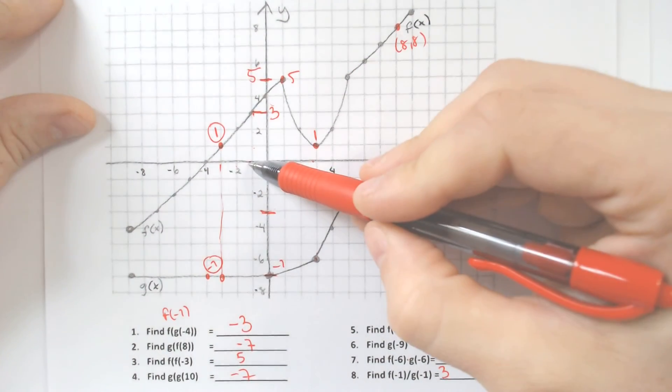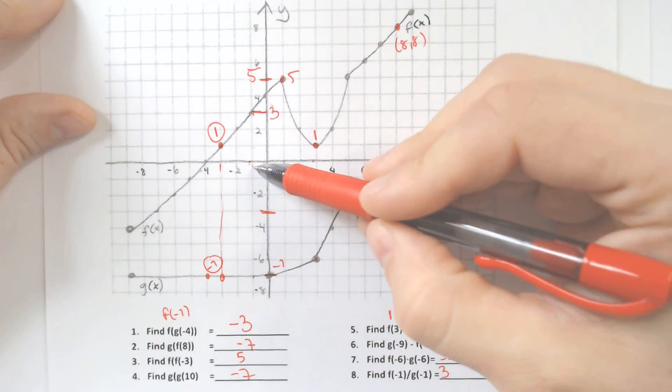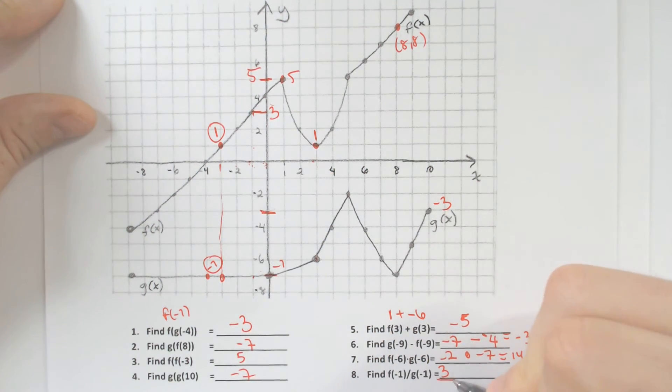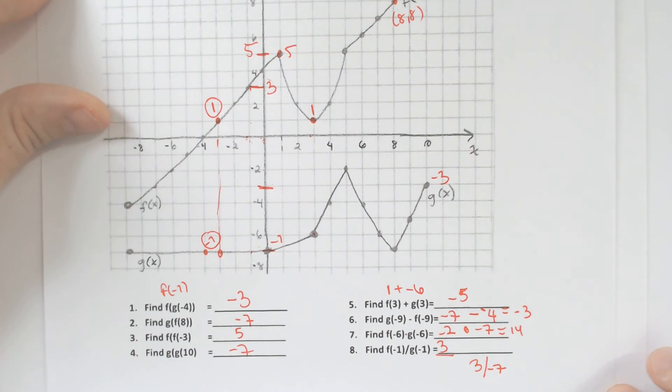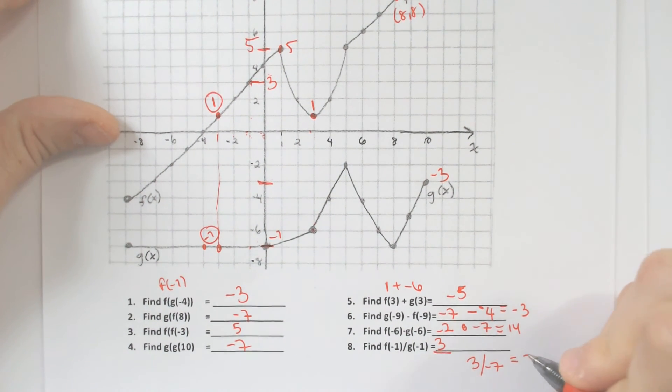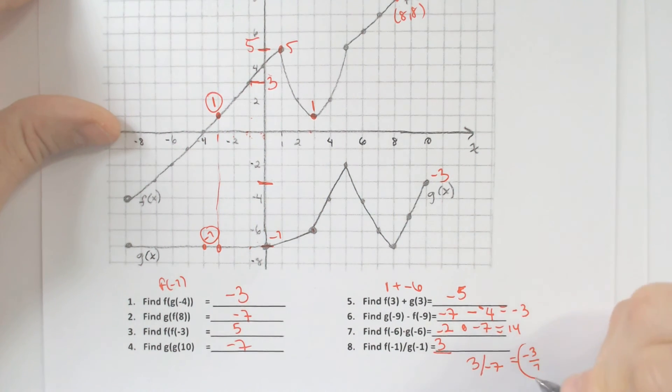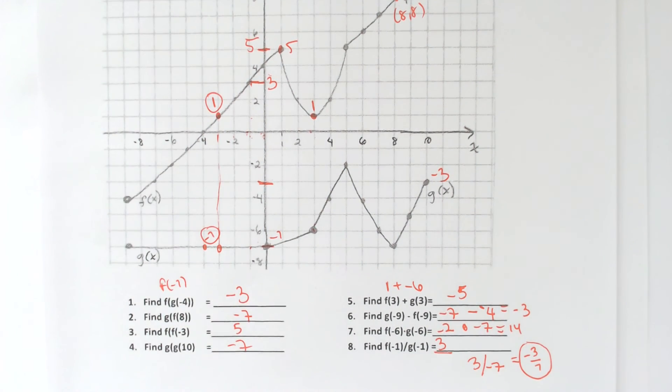And g of negative 1, guess what it is? Still negative 7. Well, what is 3 divided by negative 7? You could write 3 divided by negative 7, or you could write negative 3 over 7. In most cases, you would not write the decimal for that one.